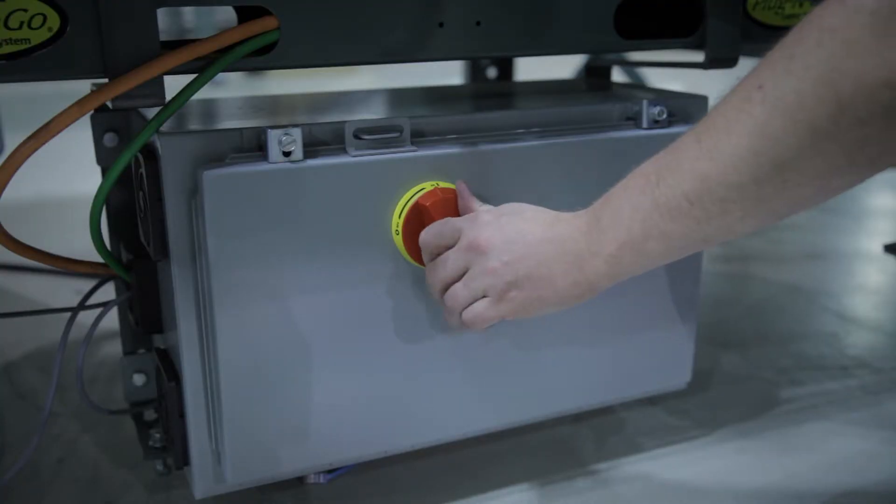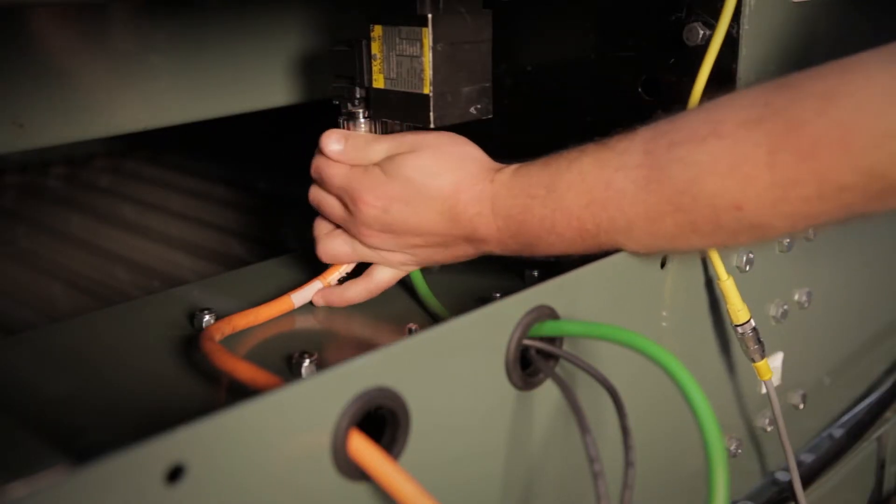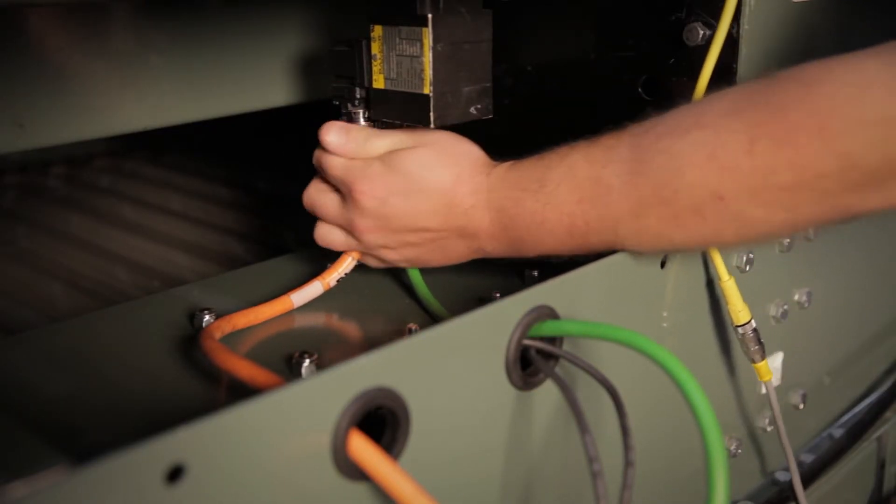Following all lockout-tagout procedures, turn the disconnect on the front of the panel to the off position to disconnect the three-phase supply power and control signal power. Wait at least 90 seconds after removing power to allow it to dissipate to a safe level.